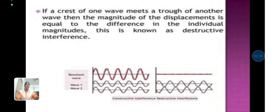If a crest of one wave meets a trough of another wave, then the magnitude of the displacement is equal to the difference in the individual magnitudes, which is known as destructive interference. Here, the image is clearly seen about the destructive interference of the continuous waveform.